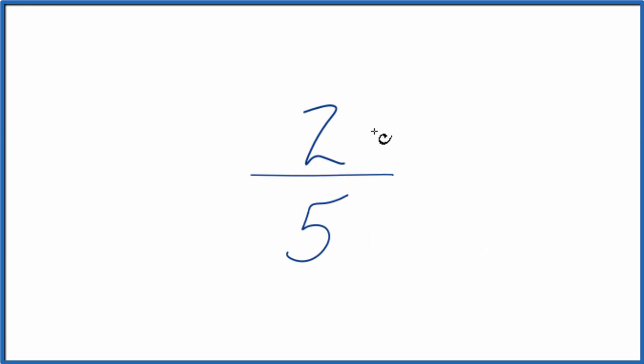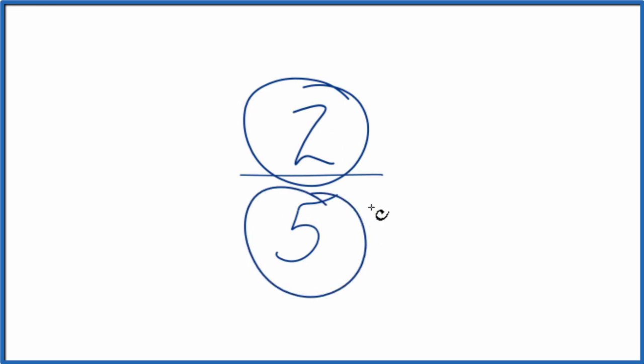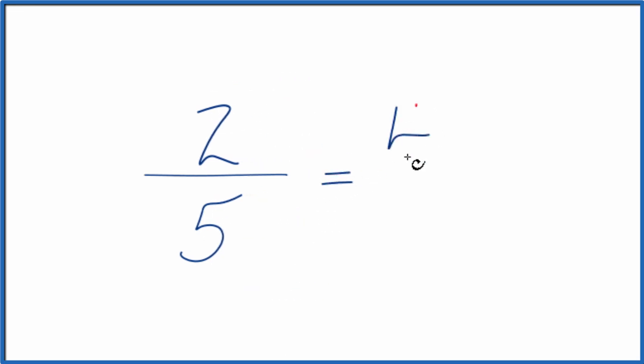So let's multiply the numerator and the denominator by 2. 2 times 2 is 4, 5 times 2 is 10. And 4 tenths, that's an equivalent fraction or an equivalent ratio for two-fifths. If you divide 2 by 5 or 4 by 10, you'll get the same answer, 0.4.